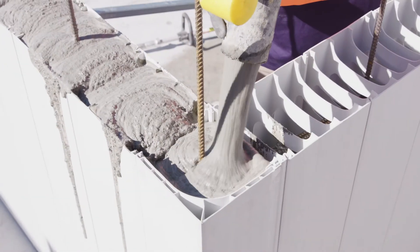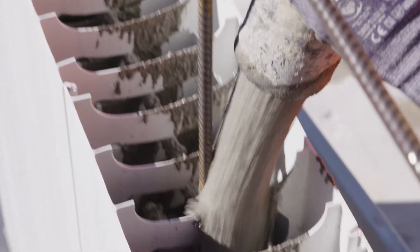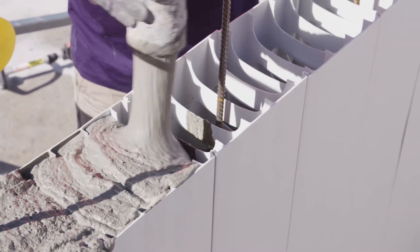Continue to pour, cascading the concrete away from the created concrete mound along the wall until the maximum pour height of 1500mm is reached.